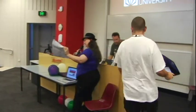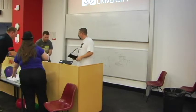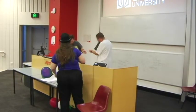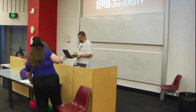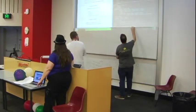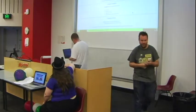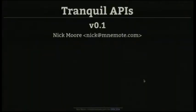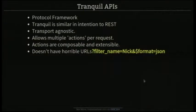Next up we have Nick Moore talking about Tranquil APIs. This is one of those wild hair projects — something that was annoying me while working on another project, so I gave it a name and now it's got slides. It's called Tranquil APIs. Basically the idea is it's a protocol framework, a bit like REST, but without a few of the things I found really annoying about REST while working with REST and OData and similar things.